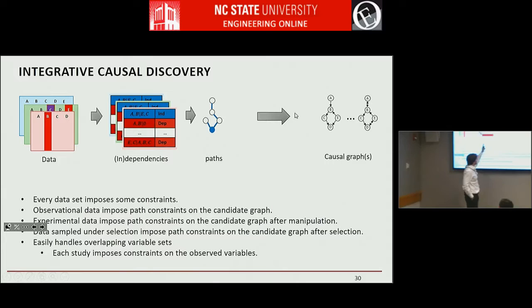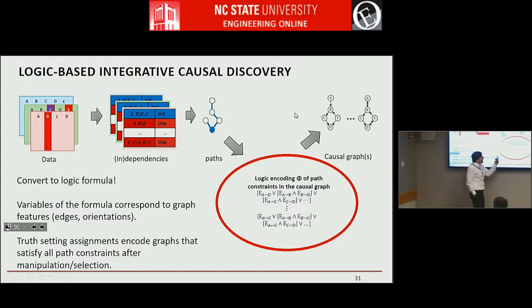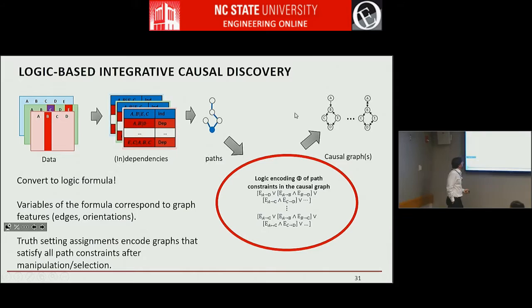Now you have all this data. You can determine a bunch of dependencies and independencies. You have constraints on the paths — what type of paths you expect in your graphs. The question is how do you figure out and solve this problem. It's quite complicated. Our idea was to convert the problem to a logic problem in first-order logic or propositional logic.